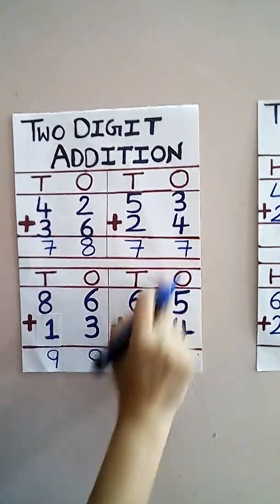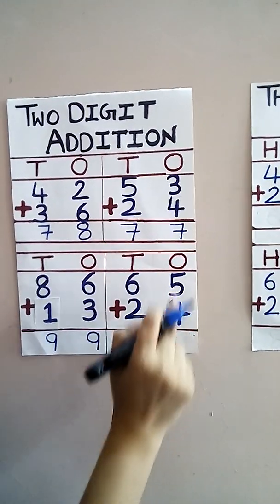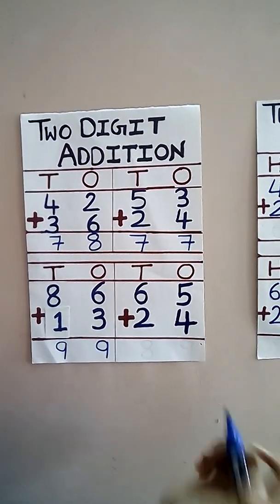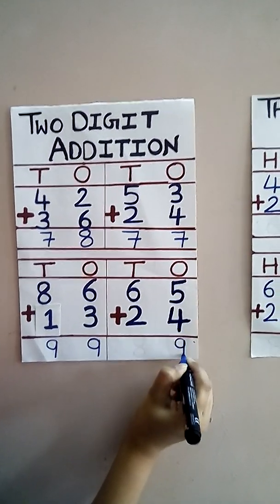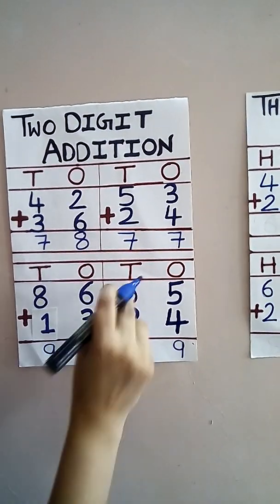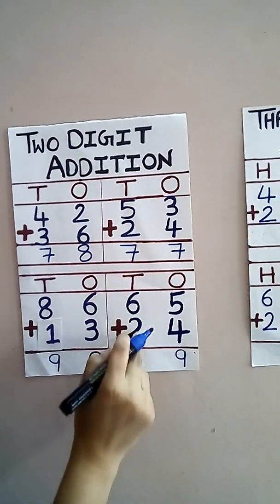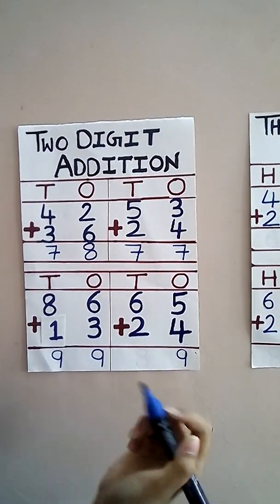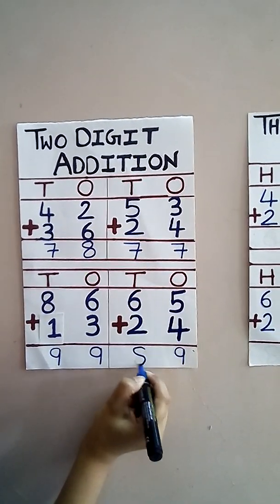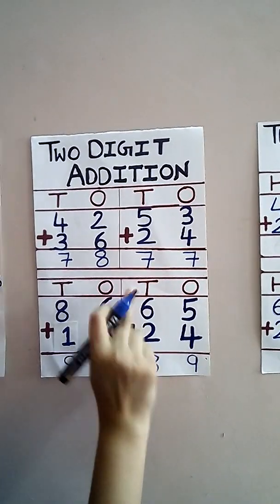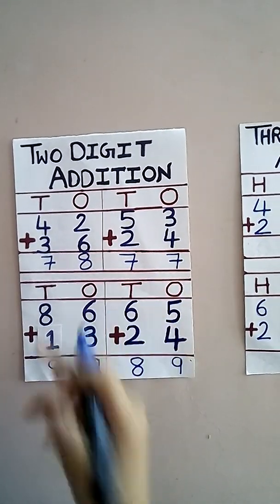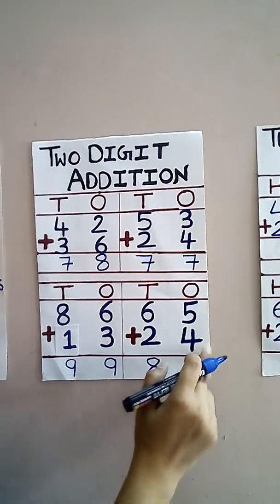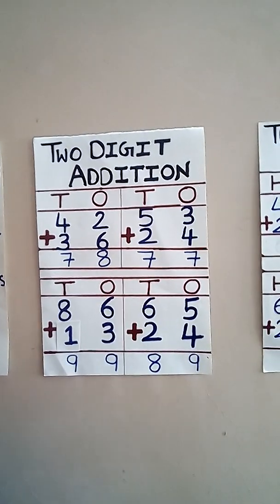Now see this. What is this? Five and four — add them: five, six, seven, eight, nine. Means nine ones. Then six tens plus two tens — six, seven, eight. We got eight tens. So when we add sixty-five with twenty-four, we got eighty-nine.